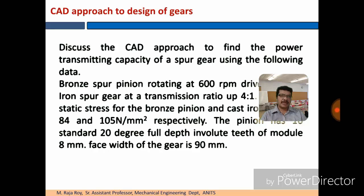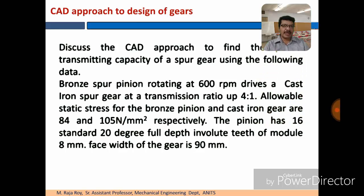I will explain how to solve a gears problem using the CAD approach. The problem is: Discuss the CAD approach to find the power transmitting capacity per gear using following data. Bronze pinion rotating at 600 rpm drives a cast iron spur gear at the transmission ratio of 4 to 1.